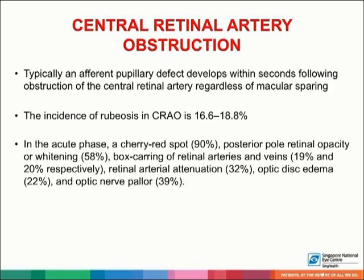In the acute phase, a cherry red spot, posterior pole retinal opacity or whitening, box-scarring of retinal arteries and veins, retinal arterial attenuation, optic disc edema, and optic nerve pallor may be seen. Typically, the retinal opacification resolves over a period of four to six weeks. A patent cilioretinal artery supplying some or all of the papillomacular bundle is seen in approximately one-third of cases.